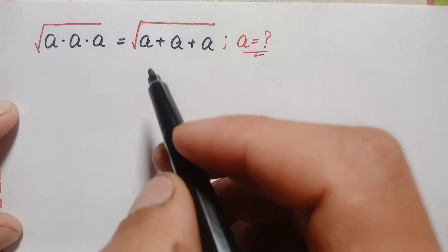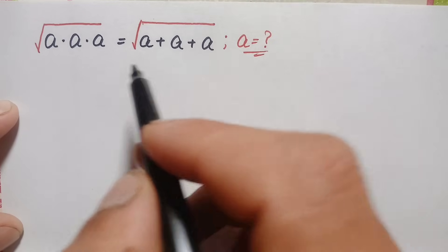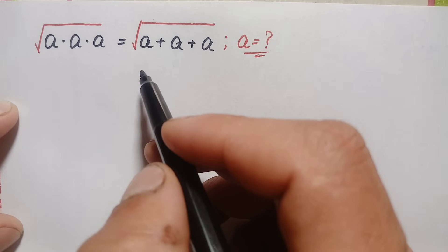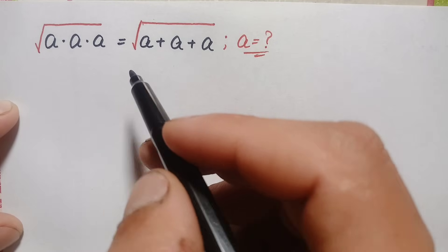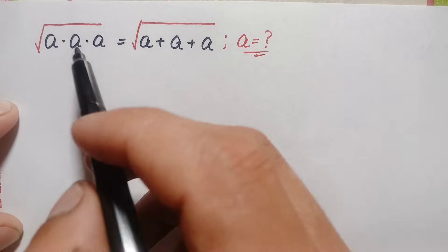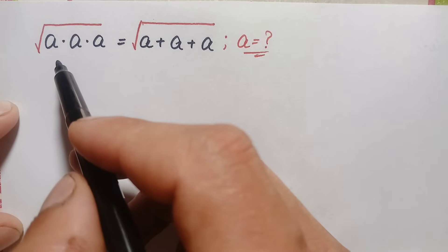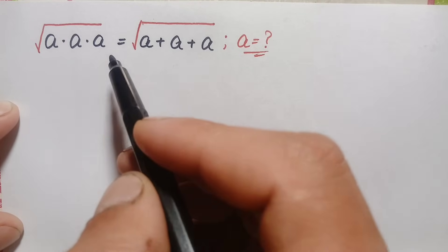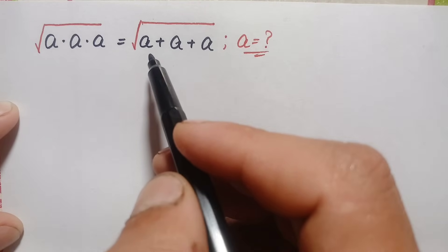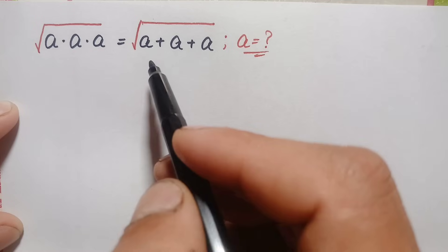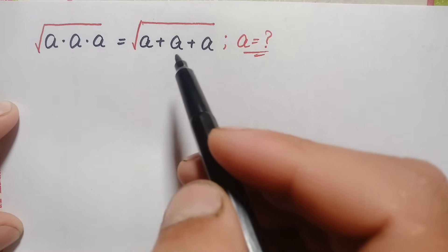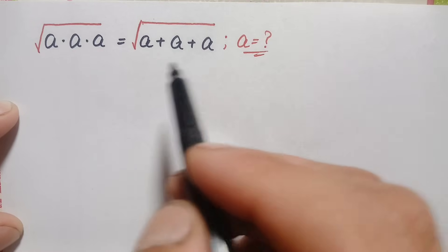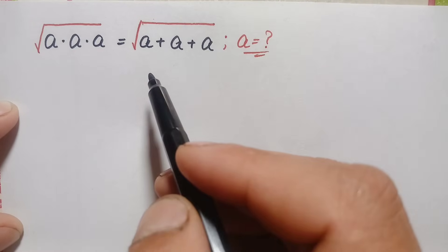Hello everyone, you are welcome. How to solve this nice square root algebra math problem, which is: whole square root of a times a times a is equal to whole square root of a plus a plus a. Here we will try to find the value of a.